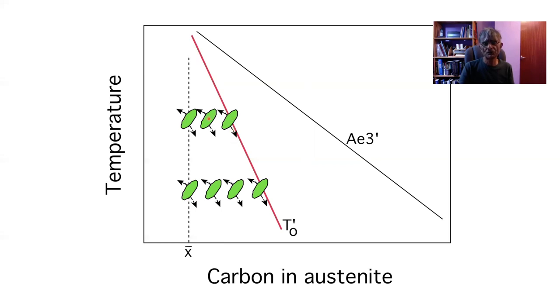Notice also that when I transform at a higher temperature I will get less bainite than when I transform at a lower temperature, because the amount of carbon the austenite can tolerate increases as you reduce the temperature.